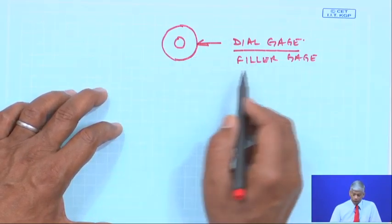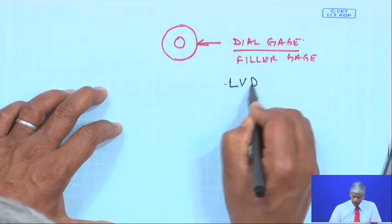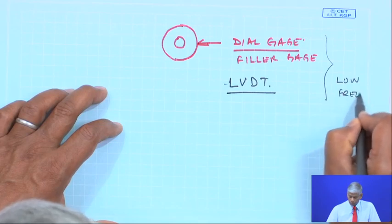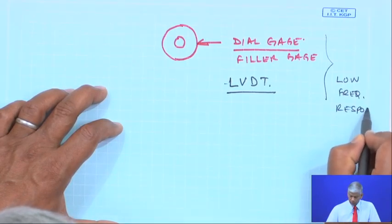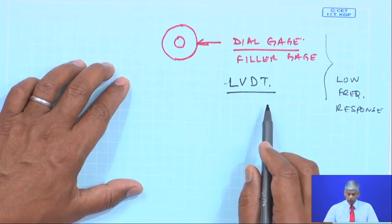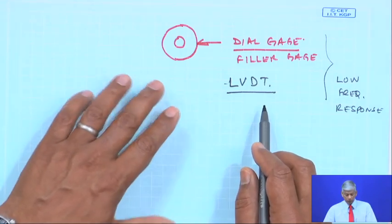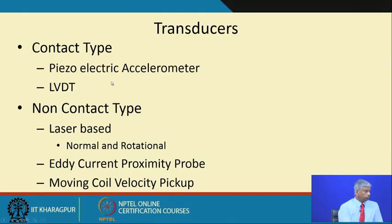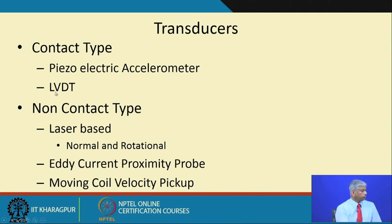A mechanical device like an LVDT is another option, but these devices have a low frequency response. Since the phenomena itself is slowly moving, I can use such transducers — be it a dial gauge or an LVDT — to measure displacement. To summarize contact-type transducers: piezoelectric accelerometers measure acceleration; dividing by ω gives velocity if necessary; and for displacement, an LVDT can be used.